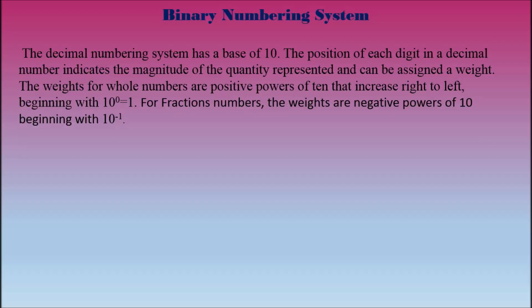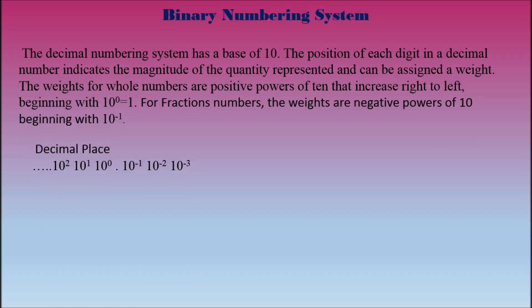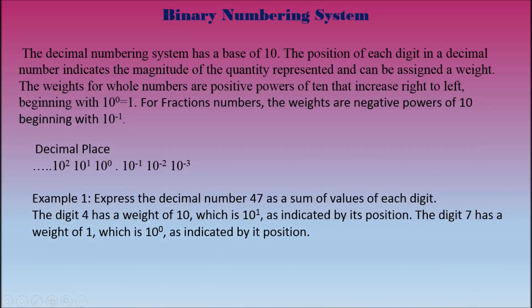The weights for whole numbers are positive powers of 10 that increase right to left, beginning with 10 to the power of 1. For fractional numbers, the weights are negative powers of 10, beginning with 10 to the negative 1. On our decimal place diagram, to the left we have 10 to the power of 0, 10 to the power of 1, 10 to the power of 2, and on the other side of the decimal point we have 10 to the negative 1, 10 to the negative 2, and 10 to the negative 3.